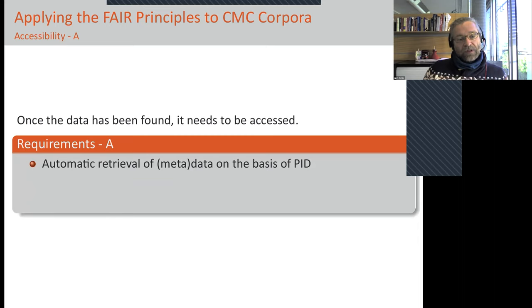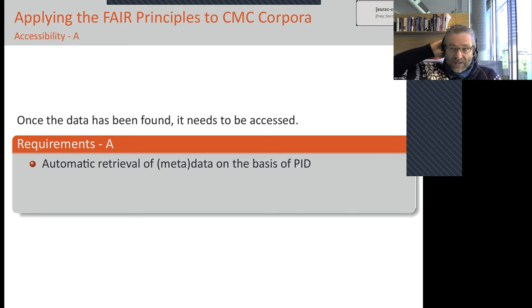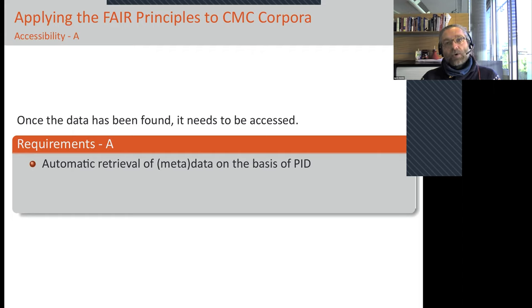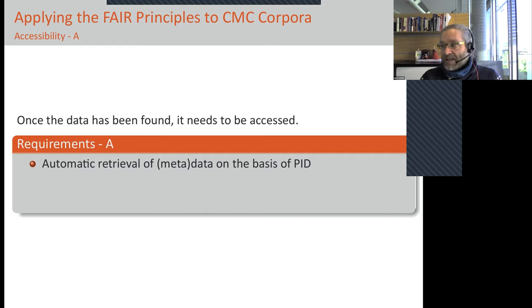The requirements in the FAIR guiding principles for accessing the data include that automated retrieval should be possible. This means the interaction needed to access the data should probably not be 'please write an email' or 'please call and we'll discuss the details,' but there should be some automated way — ideally in a form that can also be automated for computers.